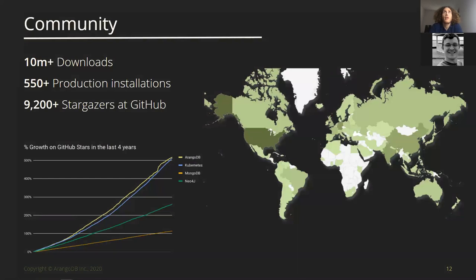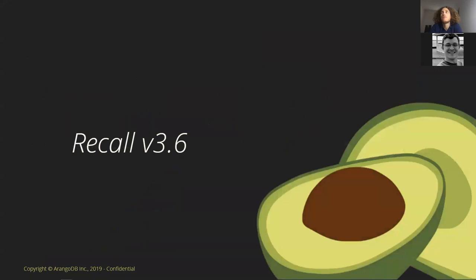We're really proud of our community. We have over 10 million downloads, 550 known production installations, and we recently crossed 10,000 stargazers on GitHub. GitHub stars are increasing dramatically. I'm an open-source person and I'm very proud to have such a great community.